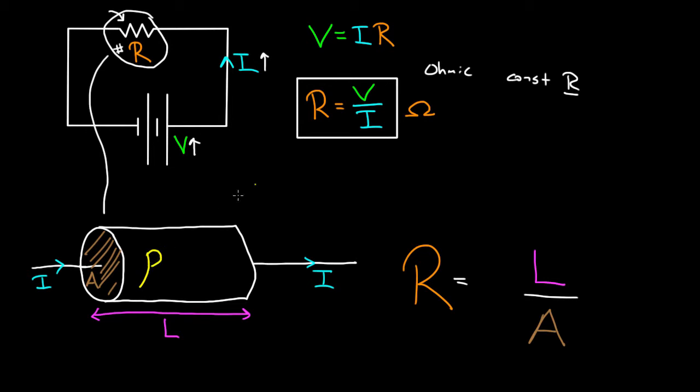And it's represented with a Greek letter rho. And the bigger the resistivity of a material, the more it naturally resists the flow of current through it.